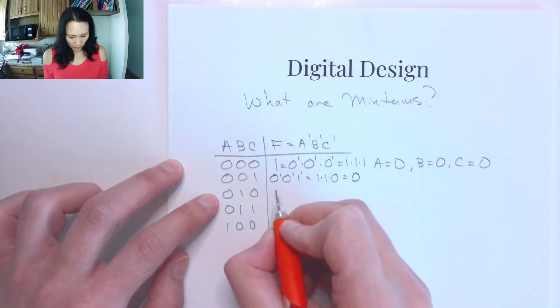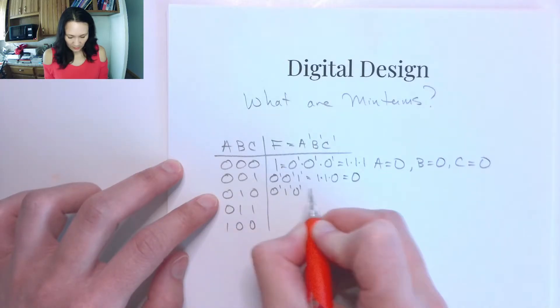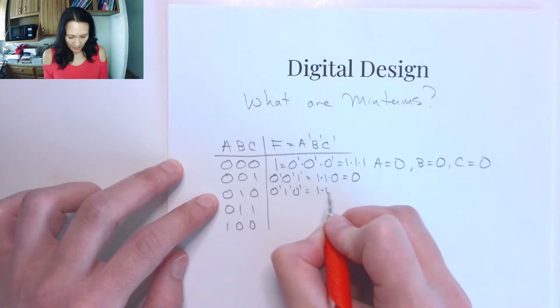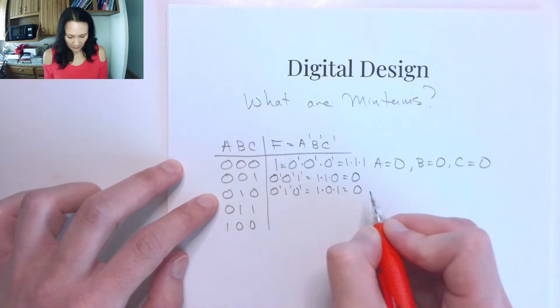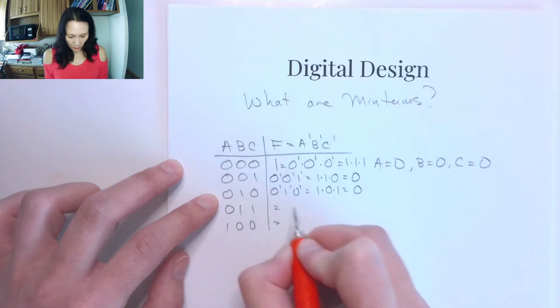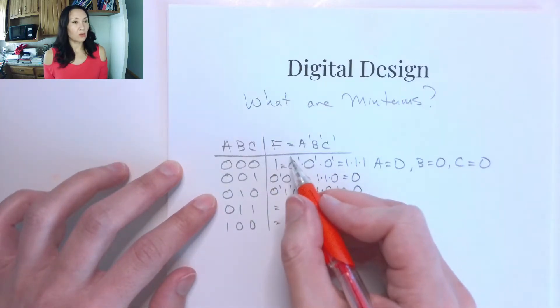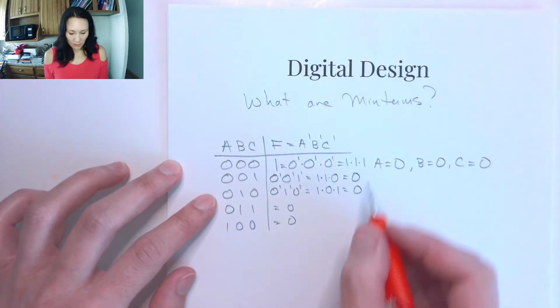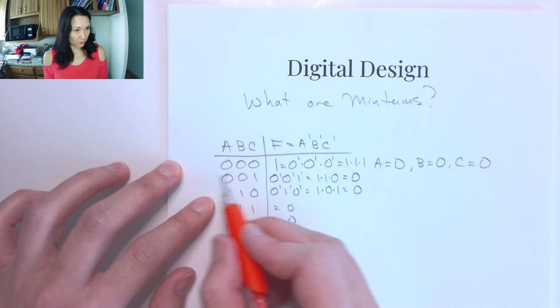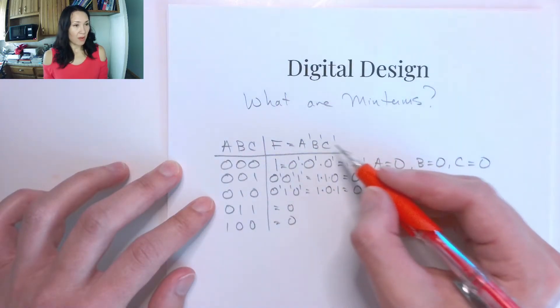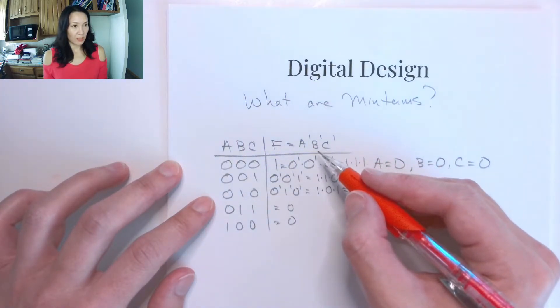Same story for this case. This is going to be 0 naught, 1 naught, 0 naught, which gives me 1 and 0 and 1, which will be 0. So actually, all of these are going to evaluate to 0 down the entire truth table. And the only one that's going to be true is this first case here, if my function is defined as A naught, B naught, C naught.